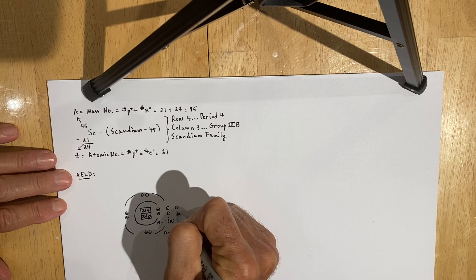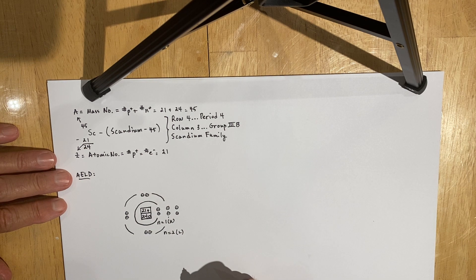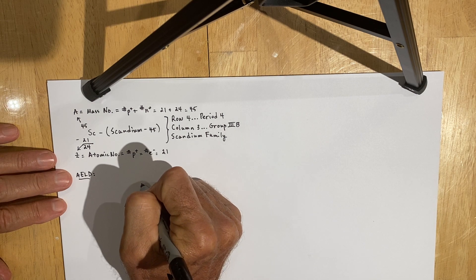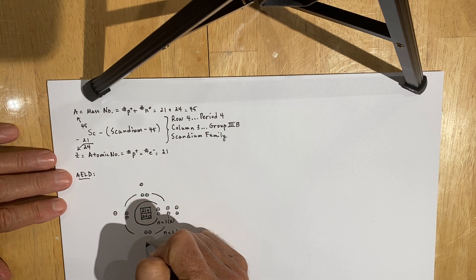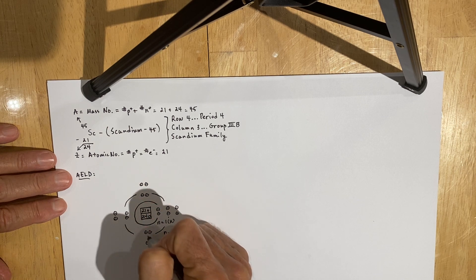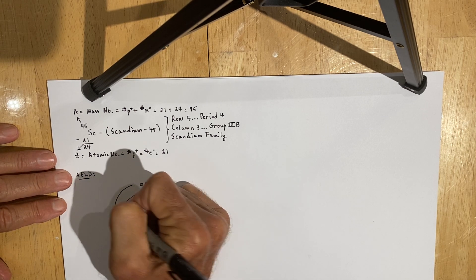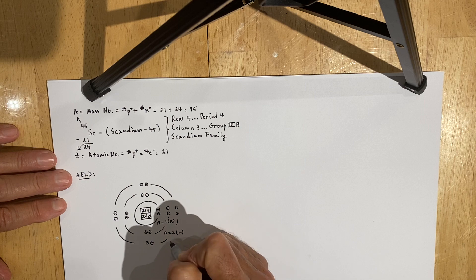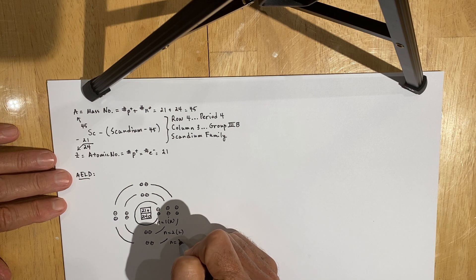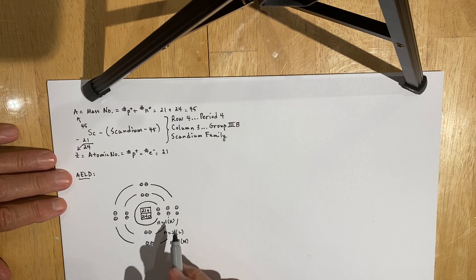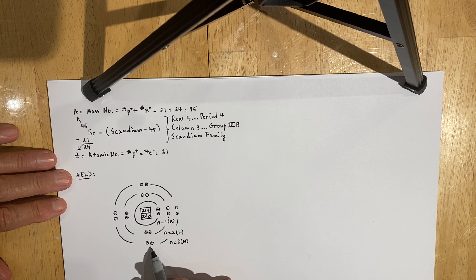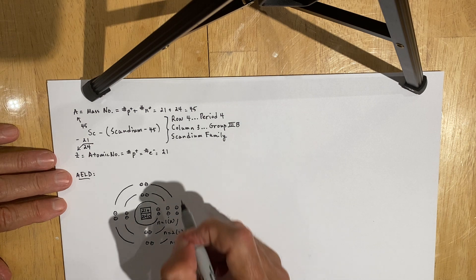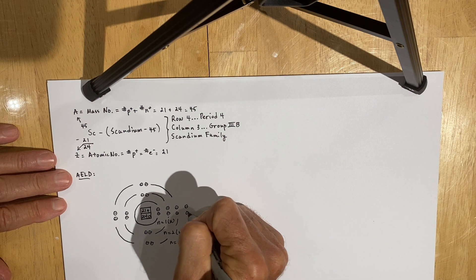We move to the third energy level by the Aufbau principle. To begin placing electrons on the third energy level, we place two in the orbital for the S sub-level, then begin to fill the P's by Hund's rule — each orbital in a sub-level gets one electron before you pair them up. We have now represented the electrons in the S and two P sub-levels on the third energy level, which is the N equals 3, or M shell. Once we've filled the third energy level, theory says we move to the fourth energy level, so we place two on the 4S.